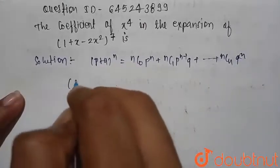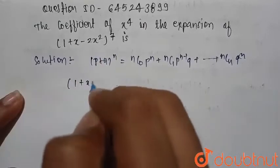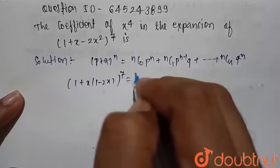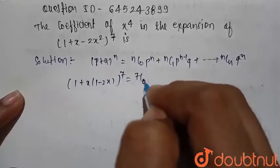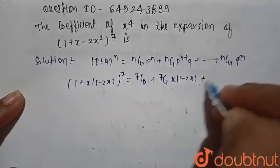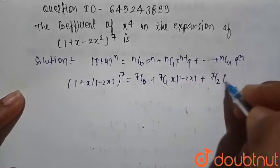Now similarly we write this, that is 1 plus here take x common, and 1 minus 2x whole raised to power 7. This can be written as 7C0 plus 7C1 into x 1 minus 2x.